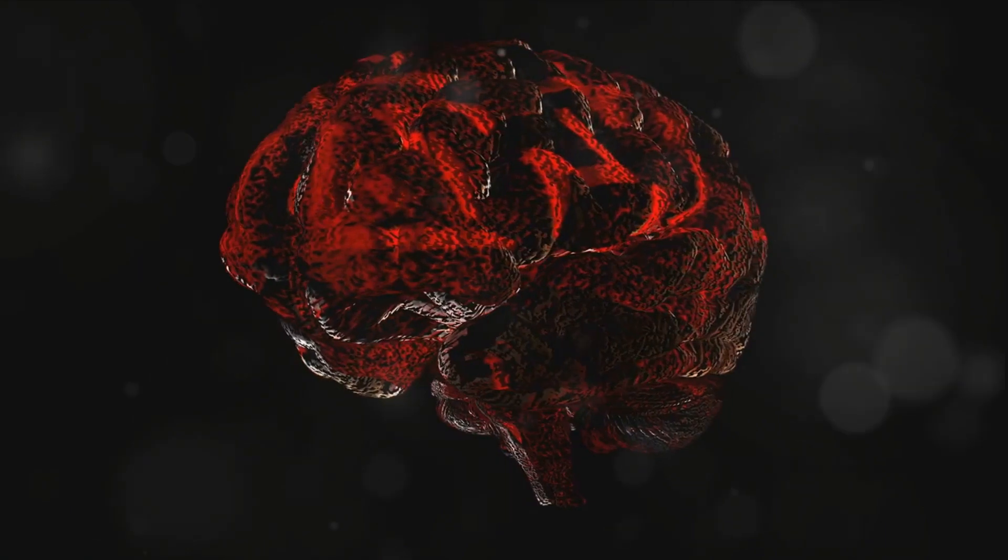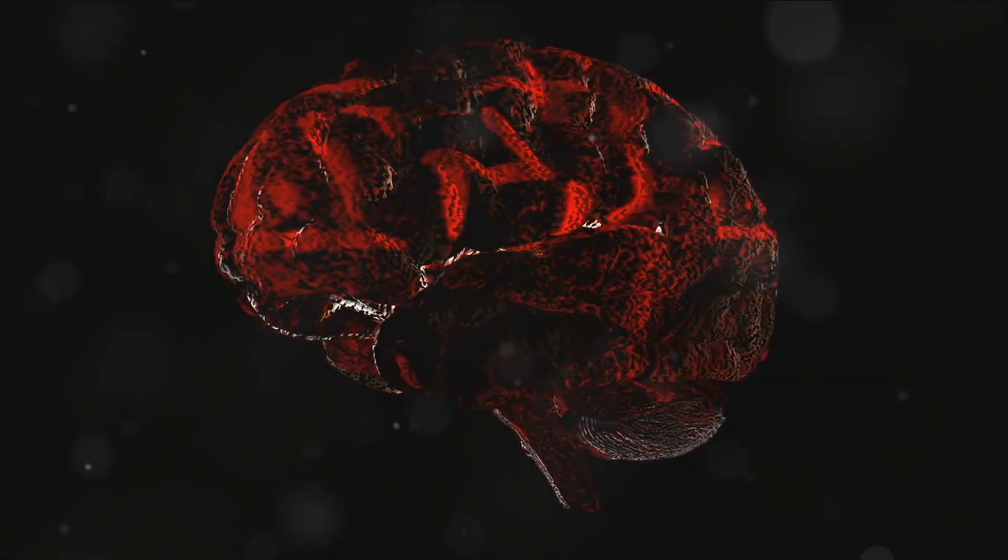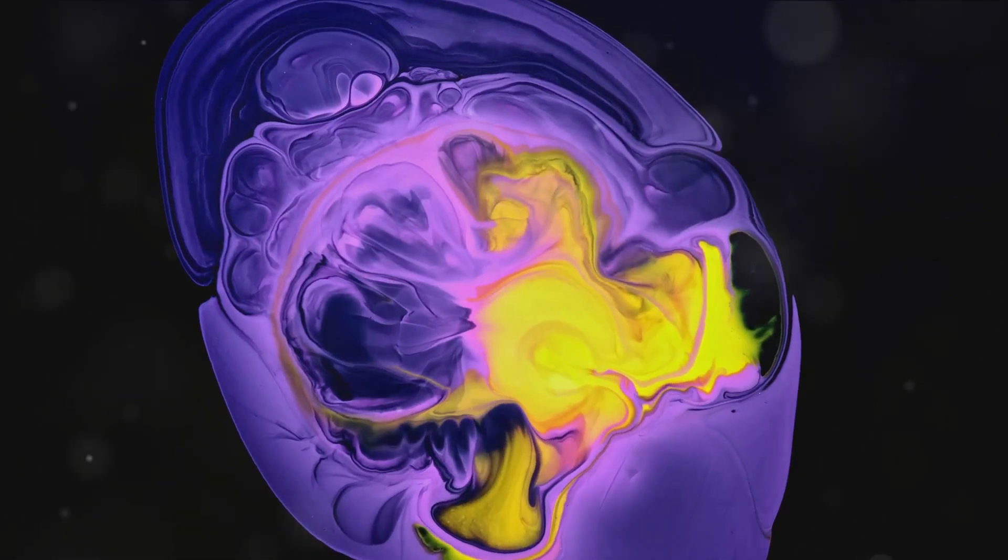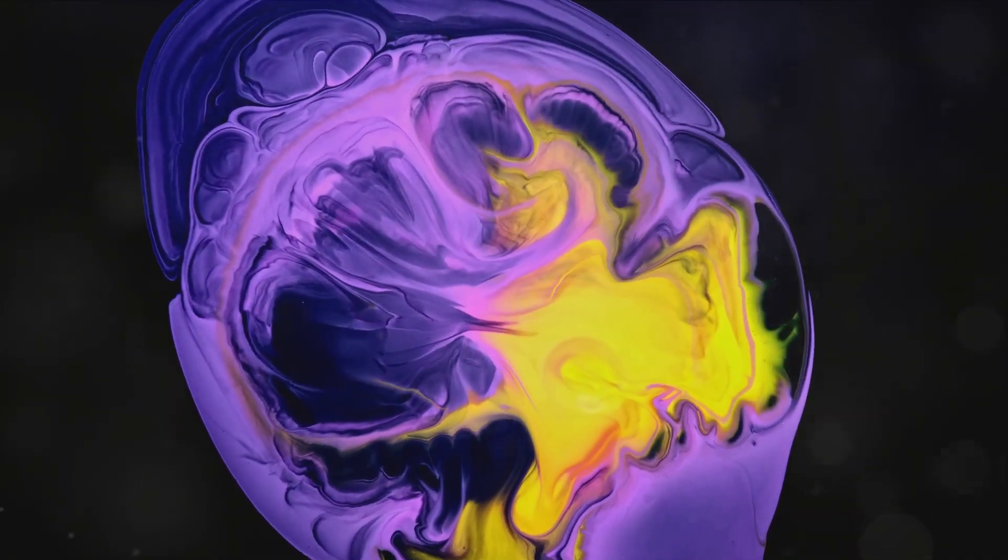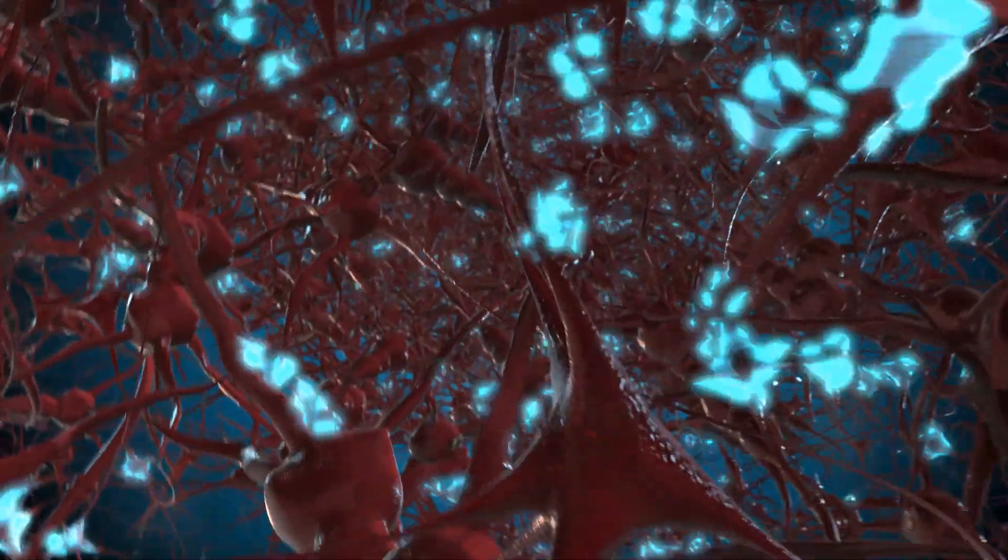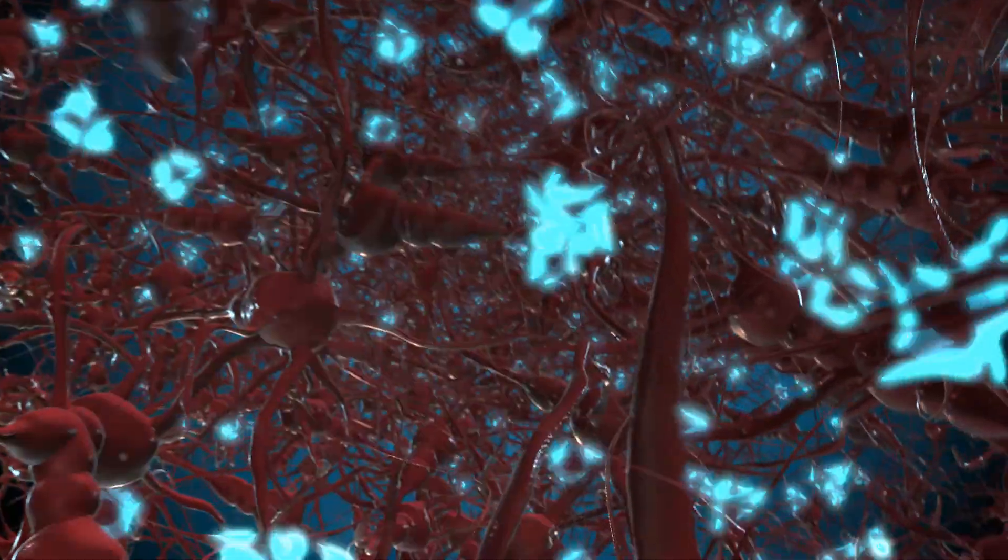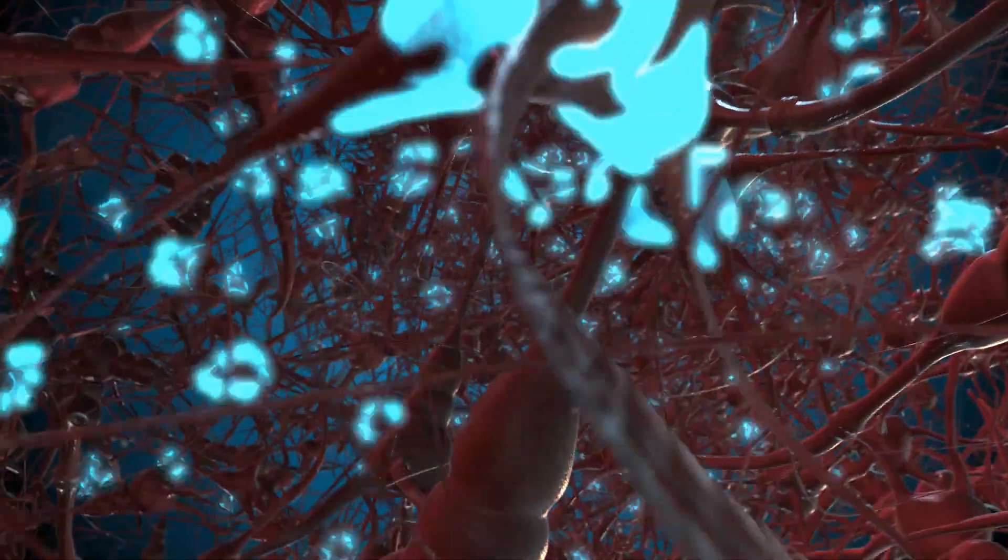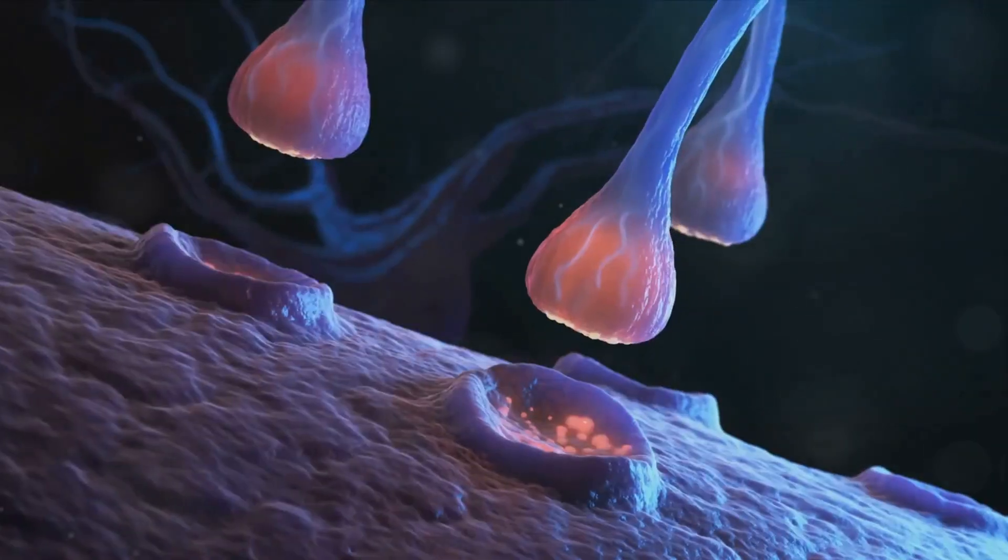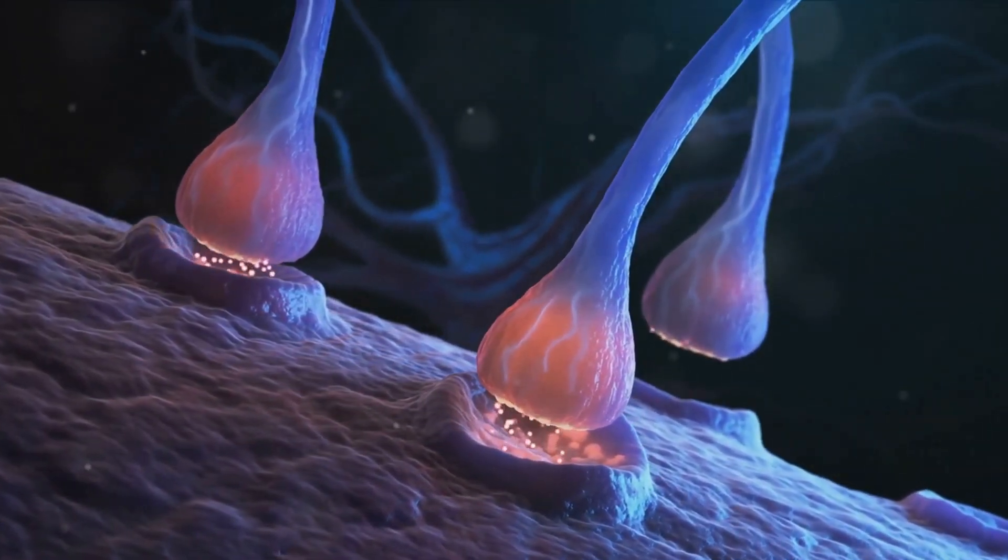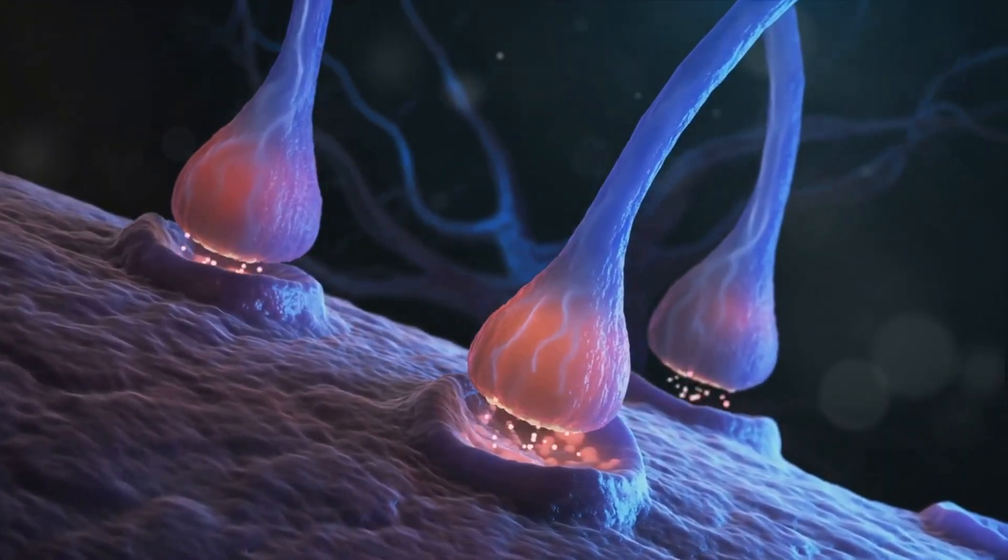This intense neural workout not only strengthens existing neural connections, but also forges new pathways, leading to remarkable changes in brain structure and function. One of the most extraordinary changes occurs in the corpus callosum, the bridge of nerve fibers connecting the brain's left and right hemispheres. Musicians exhibit a larger and more developed corpus callosum compared to non-musicians, facilitating enhanced communication and coordination between the two hemispheres.